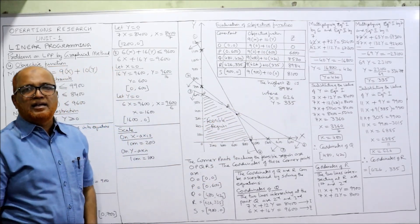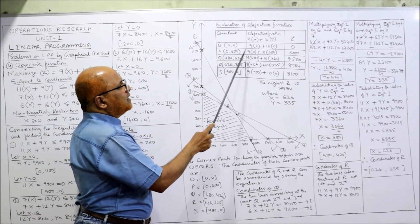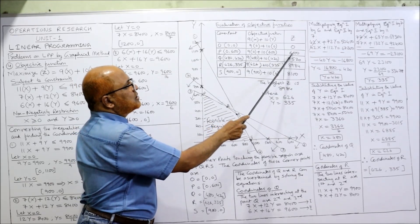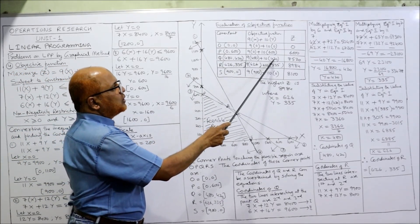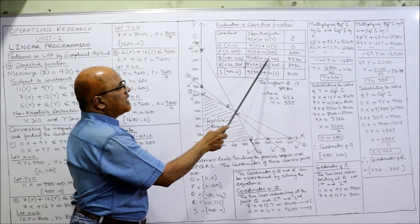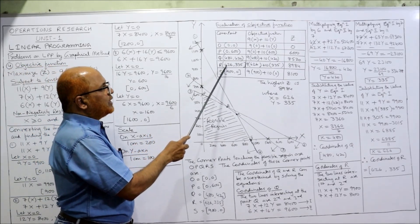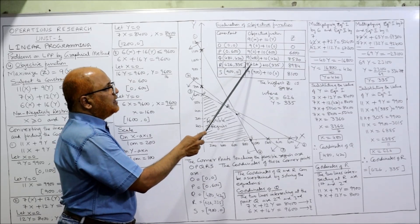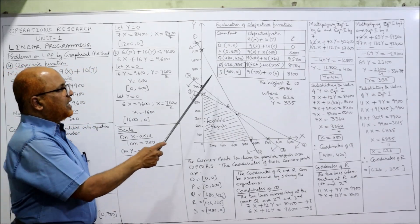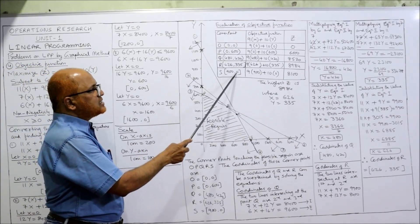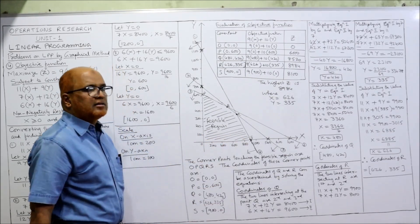Substituting into Z = 9x + 10y: At O (0,0): Z = 0. At P (0,600): Z = 10 × 600 = 6000. At Q (480,420): Z = 9 × 480 + 10 × 420 = 4320 + 4200 = 8520. At R (626,335): Z = 9 × 626 + 10 × 335 = 5634 + 3350 = 8984. At S (900,0): Z = 9 × 900 = 8100.